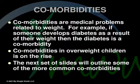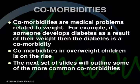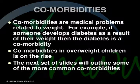Comorbidities are medical problems related to weight. For example, if someone develops diabetes as a result of their weight, the diabetes is a comorbidity. Comorbidities in overweight children are on the rise, and the next set of slides will outline some of the more common ones.